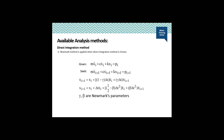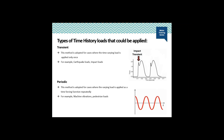We will be considering the modal superposition method for this session. The types of time history loads that could be applied are transient loads and periodic loads. For transient loads, this is adopted for cases where the time-varying load is applied only once — for example, earthquake load or impact load. The image on the right shows impact transient loading.